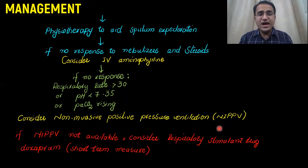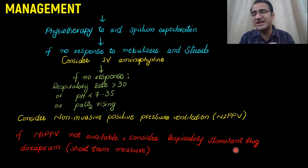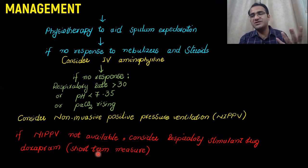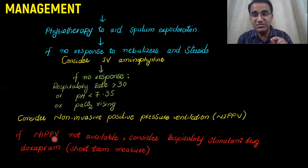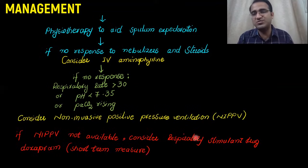If non-invasive positive pressure ventilation is not available, only then should you consider a respiratory stimulant drug — doxapram. But it is a short-term measure. Non-invasive positive pressure ventilation is the ultimate measure; if the ventilator is being arranged, you can use a respiratory stimulant in the meantime to help the patient.